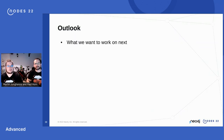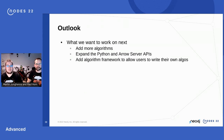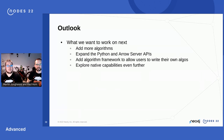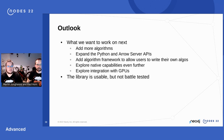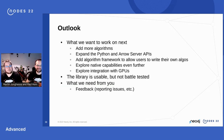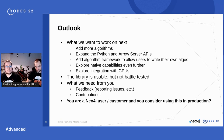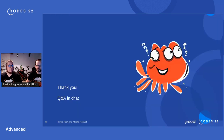Looking ahead, we want to add more algorithms, expand the APIs, and explore an algorithm framework that would let users write their own algorithms — something like Pregel. We also want to explore native capabilities like SIMD, integrating with TensorFlow or similar libraries, and GPU integration. The library is usable now but not heavily tested. We welcome feedback, issues, and contributions on GitHub. If you're a Neo4j user considering this, please reach out.